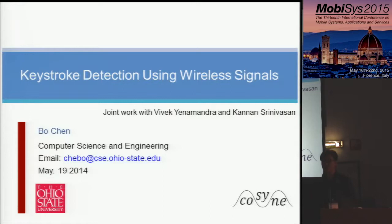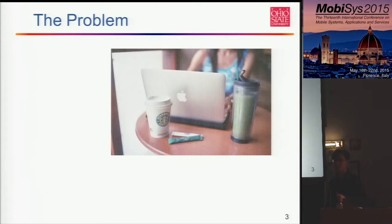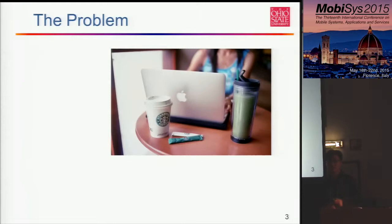Our work is motivated by one question: what can we do if we can track keystrokes using wireless signals? Think about the case where you went into a shop and tried to use your laptop there. A spy comes in and, without your notice, can track what keys you are typing just by looking at how your fingers move — tracking the finger movement to determine what key you are typing on your computer.